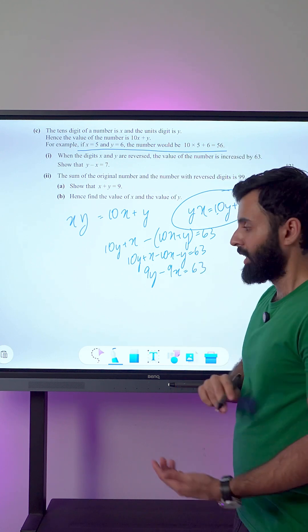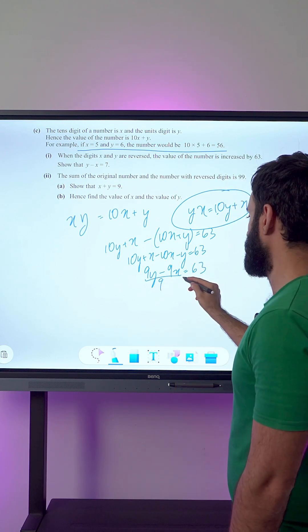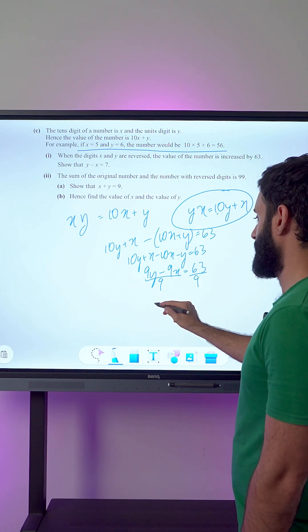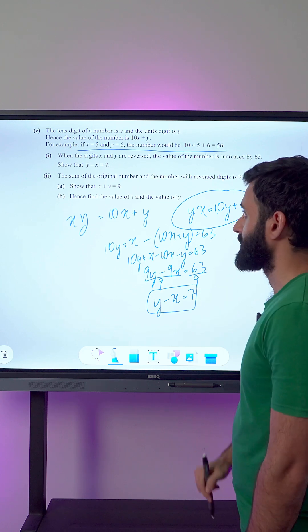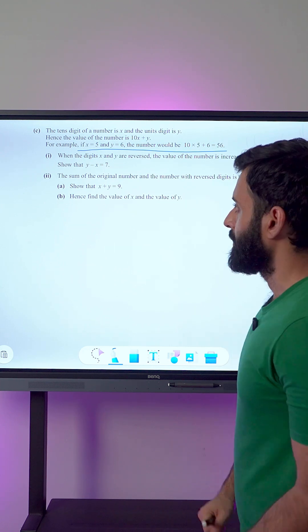Now I can divide both sides by 9, so we have y minus x, and 63 over 9 is 7. There you go, that's the answer to the first part. Now let's do the second part.